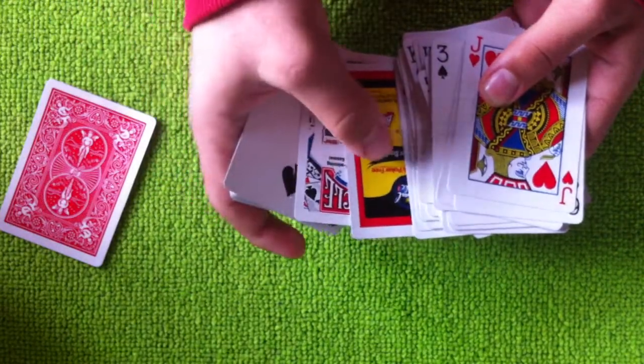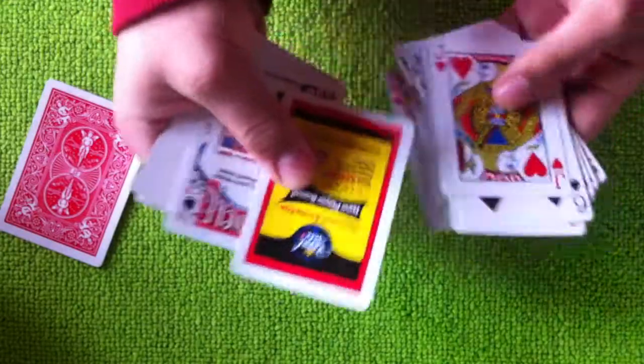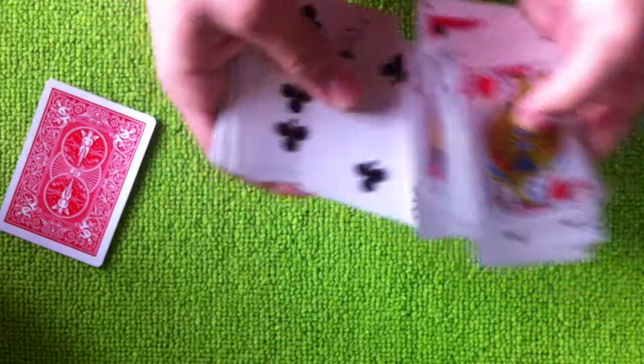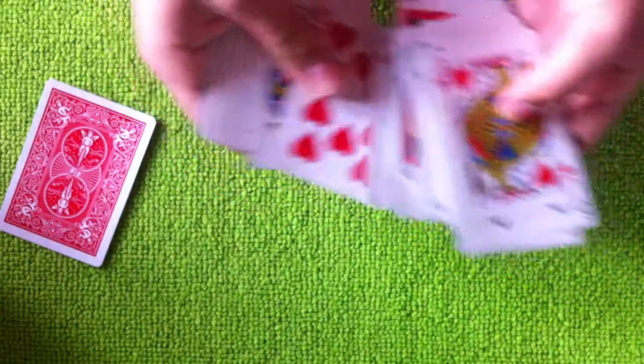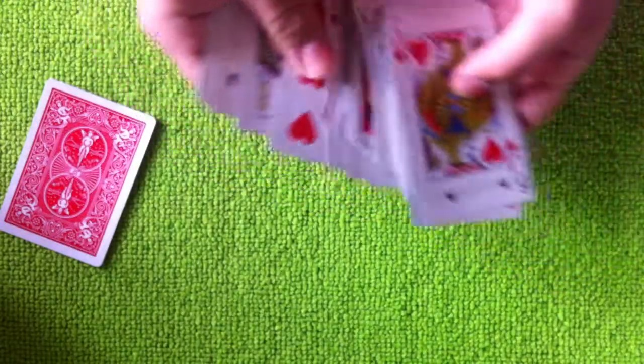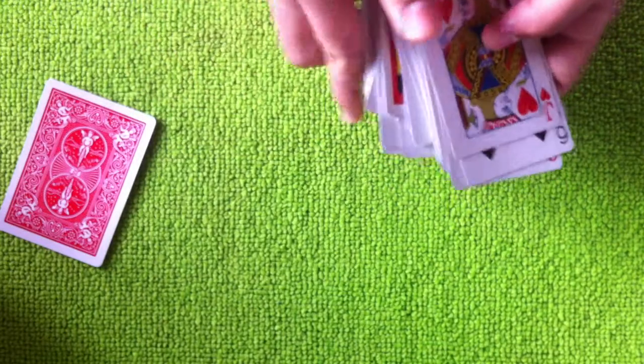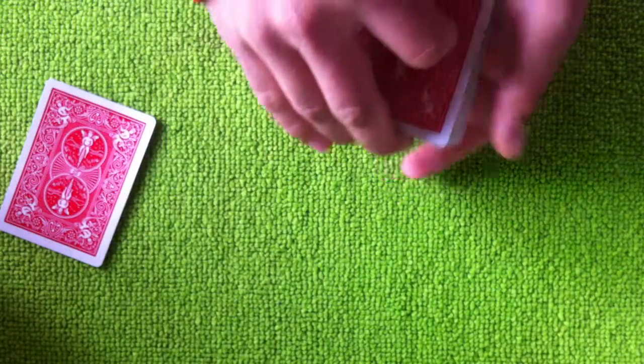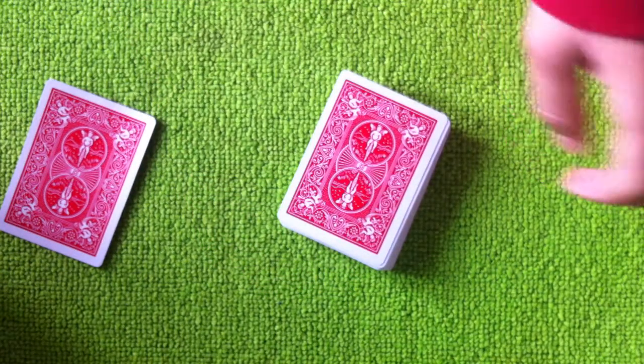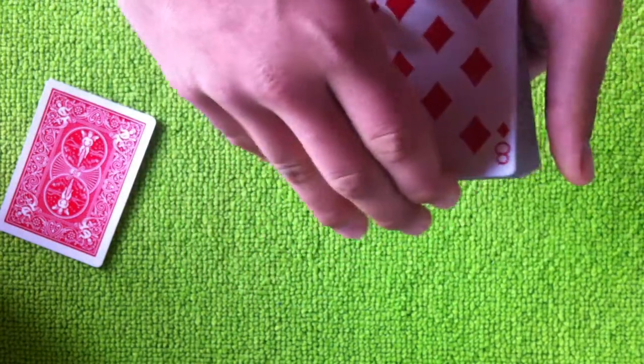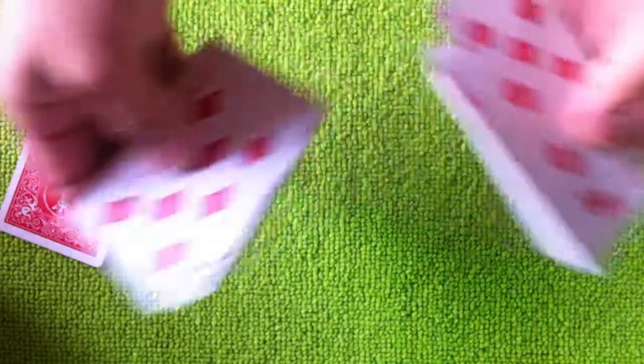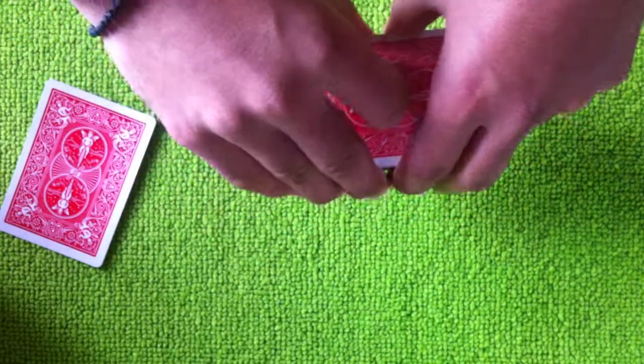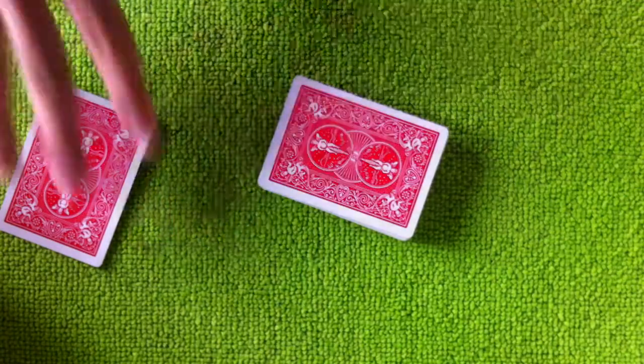So now you know, next to the key card is this card. So what you do is you count. You start from his card. One, two, three, four, five, six, seven, eight, nine, ten, eleven, twelve, thirteen... twenty. His card is the twenty-second from the top.